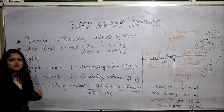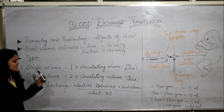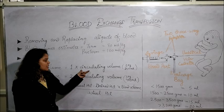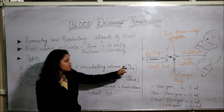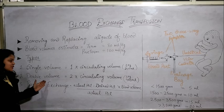When we talk about the types of blood exchange transfusion, there are three types: single volume exchange transfusion, double volume exchange transfusion, and partial exchange transfusion. In single volume transfusion, we do 1 times the circulating volume — meaning blood is exchanged once. For example, for a 3 kg term infant at 80 ml per kg, it will be 240 ml of blood to be exchanged.